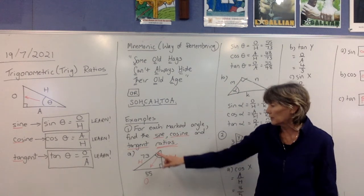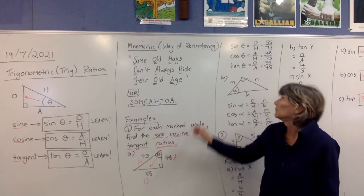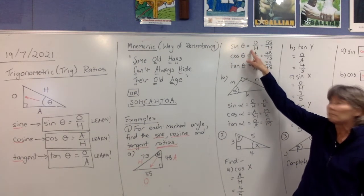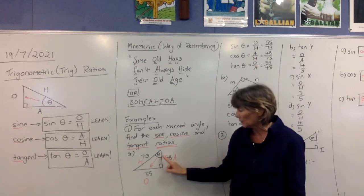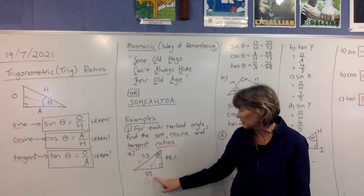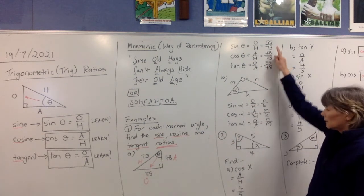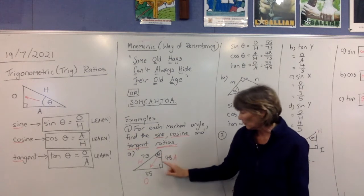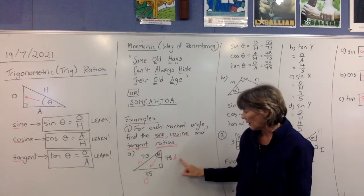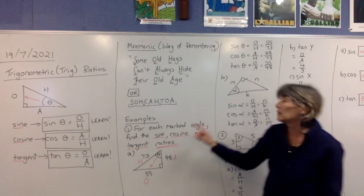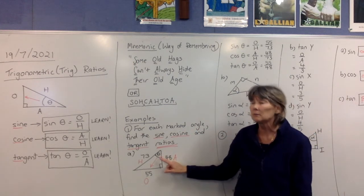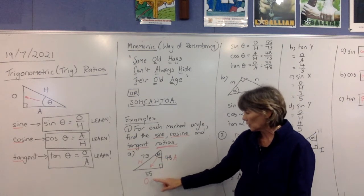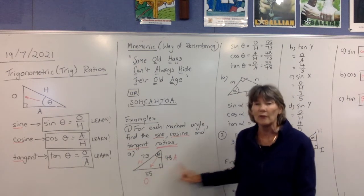Now we're going to fill these in, finding the sine, cosine, and tangent of theta. Sine theta equals O over H — that's 55 over 73. Cos theta equals A over H — 48 over 73. And tan theta equals opposite over adjacent, so tan theta equals O over A — 55 over 48.